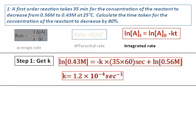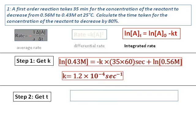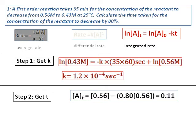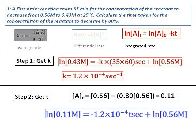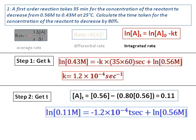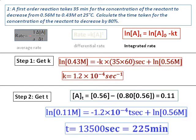Now for step 2, we need to find the time. The question asks for the time taken for the concentration to decrease by 80%. So we calculate the concentration of A at time t by taking away 80% of the initial concentration, giving a concentration of 0.11 molar. Now, substituting the concentration, initial concentration, and value of k into the equation, the value of t comes out as 225 minutes.